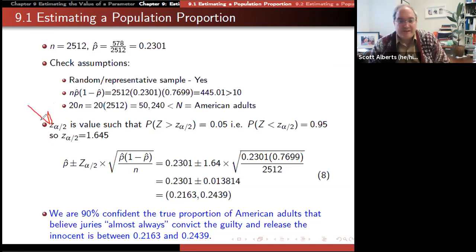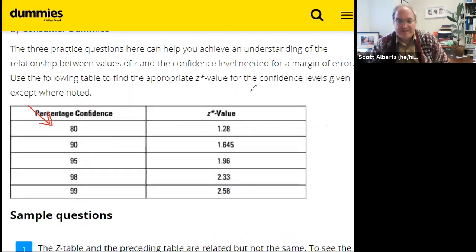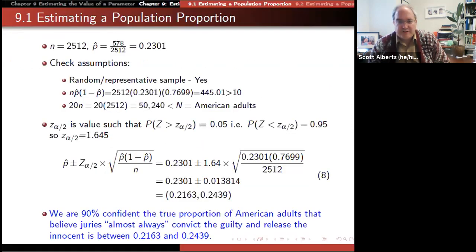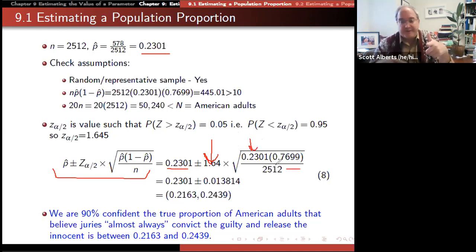Of our sample of 2,500 people, 578 said they thought the jury is almost always convicted the guilty and release the innocent. So now it's just going to be arithmetic problem. We have our n and we have our p-hat, 578 out of 2512. So 23% is what we got in our sample proportion. Then we check the assumption. First of all, was it a good sample? It was. Is our np(1-p) greater than 10? It is. Now we're going to figure out what our Z alpha is. For 90% confidence interval, that's 1.645.